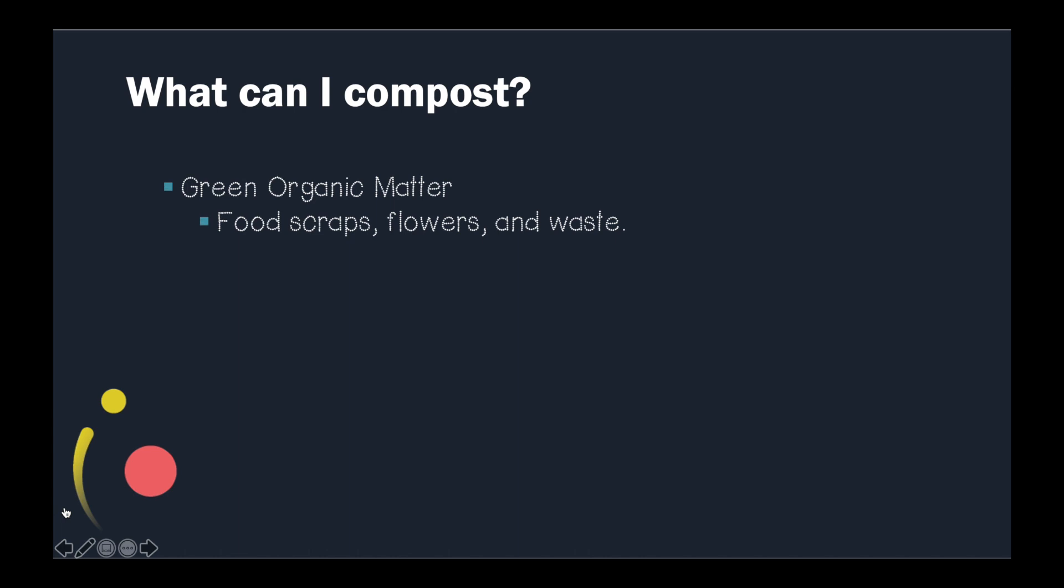All right, friends. So, we're going to continue on to what are the things that we can compost. Now, we just learned all about what composting is, what we do with our compost, as well as why we compost. So, I want to know, what can we do in our homes to make a difference? We can compost green organic matter, such as food scraps, flowers, waste. And we can compost brown organic matter, such as leaves, straw, and wood chips.